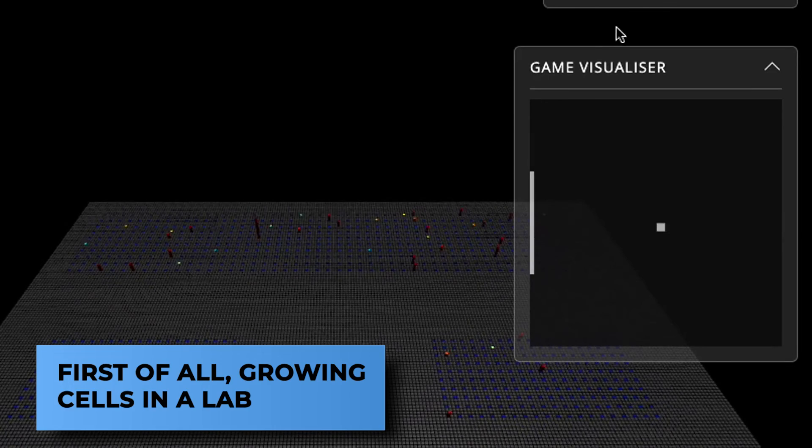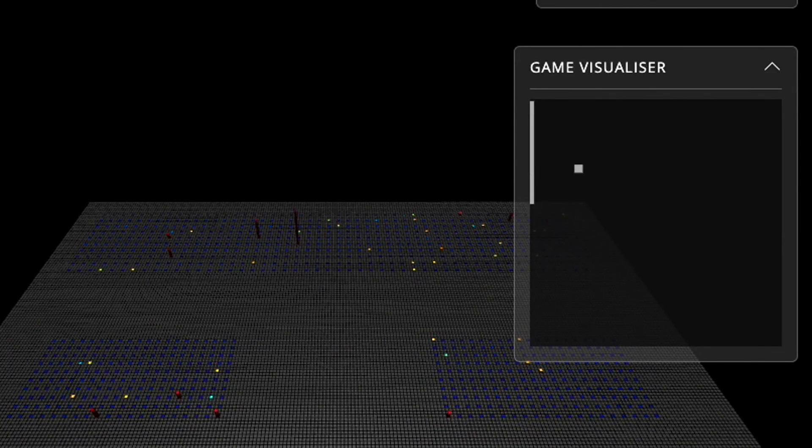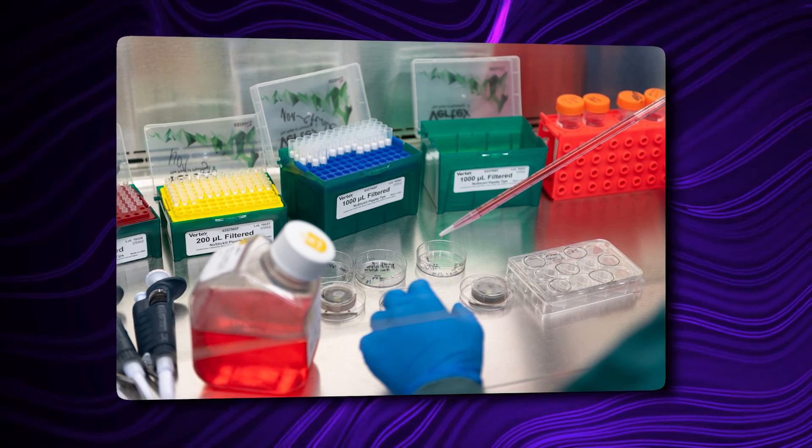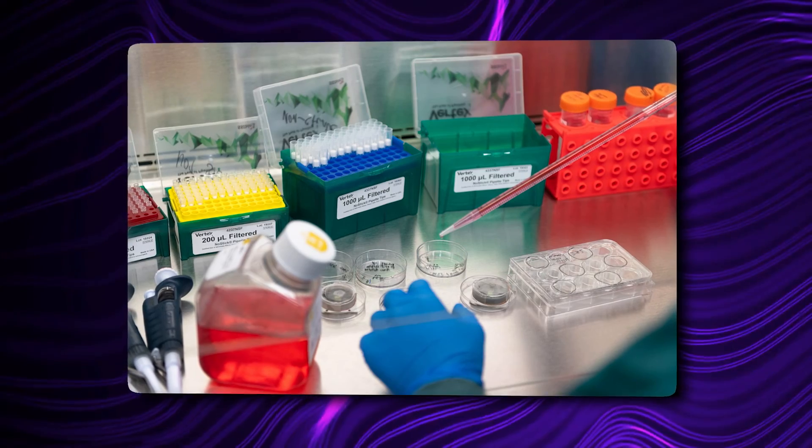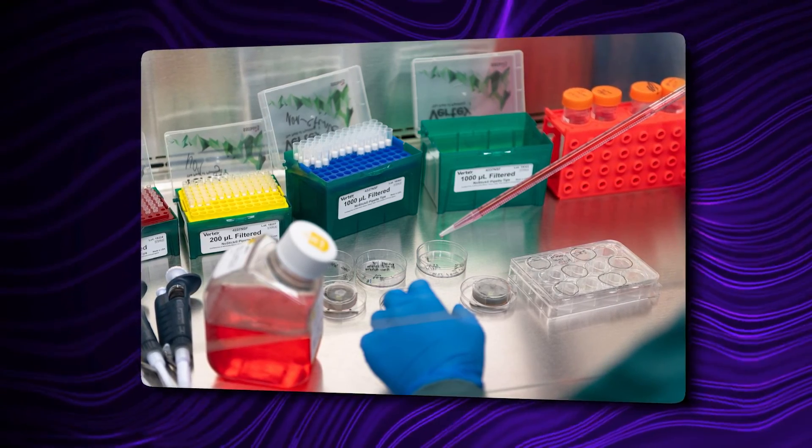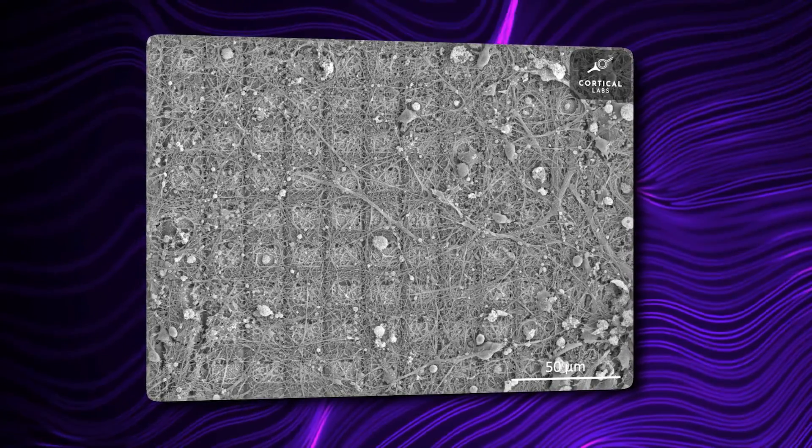First of all, growing cells in a lab. Cortical Labs in Australia conducted studies to see if nerve cells in a dish could be used to control a basic video game. It sounds crazy, doesn't it? For years, cells from people and other animals have been used in research. In labs, these living cells are grown in little dishes.